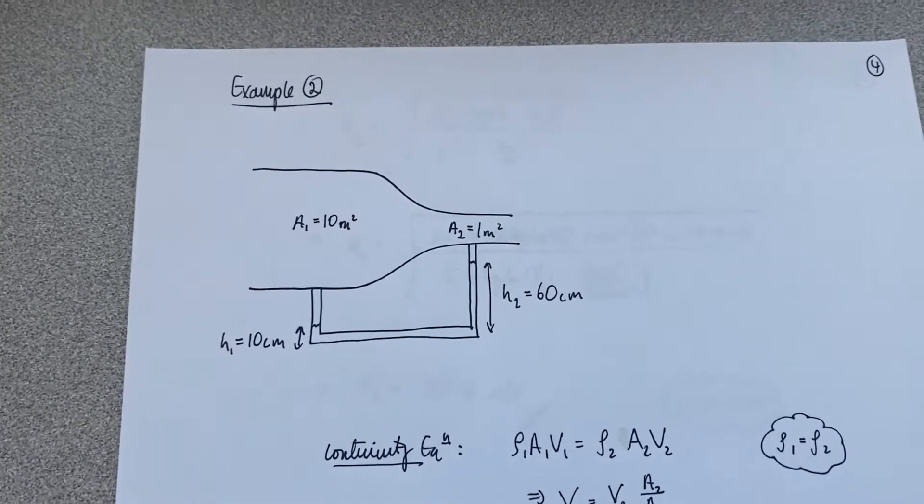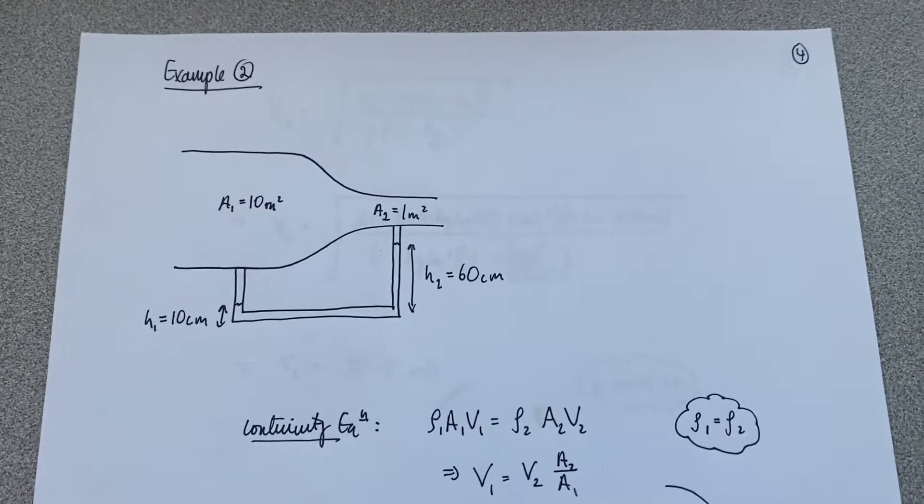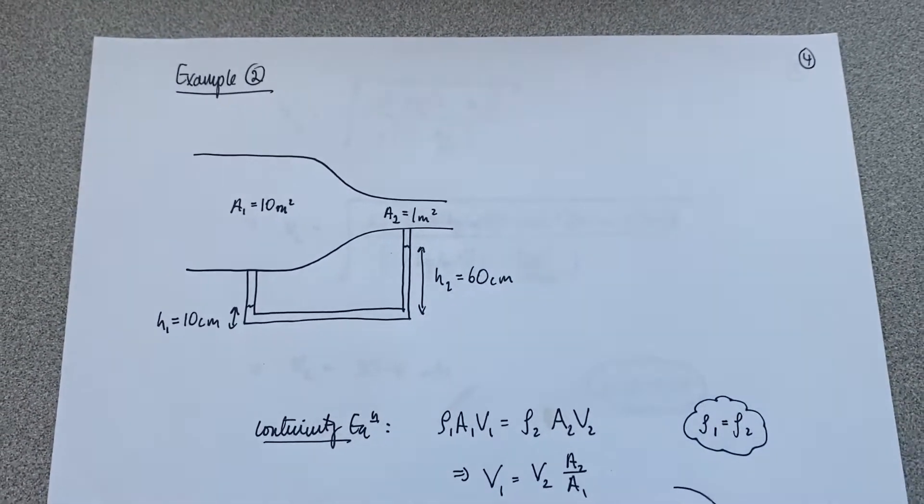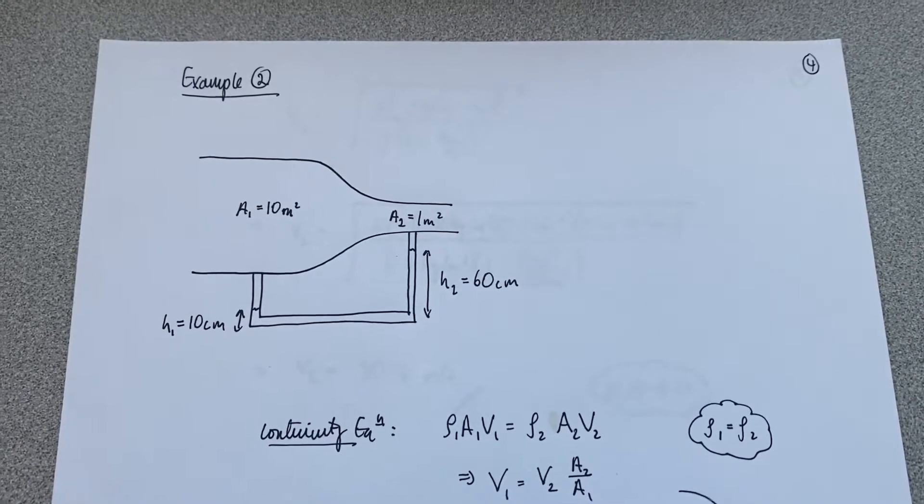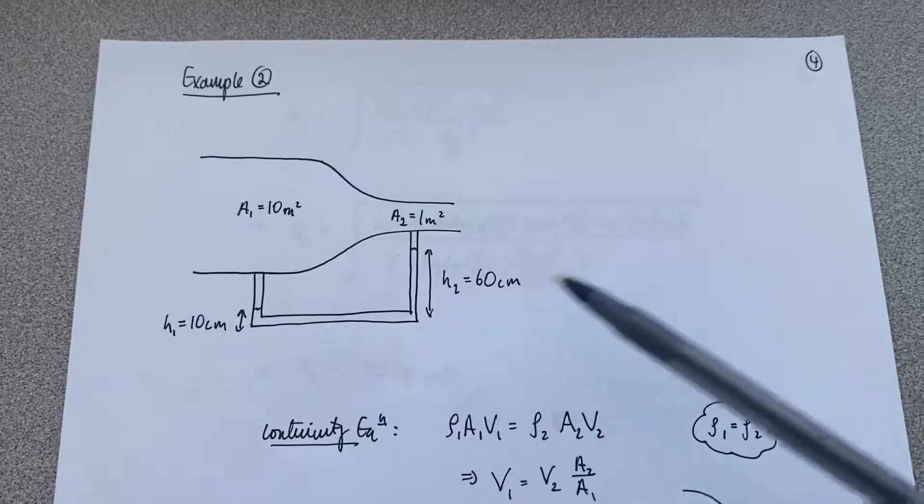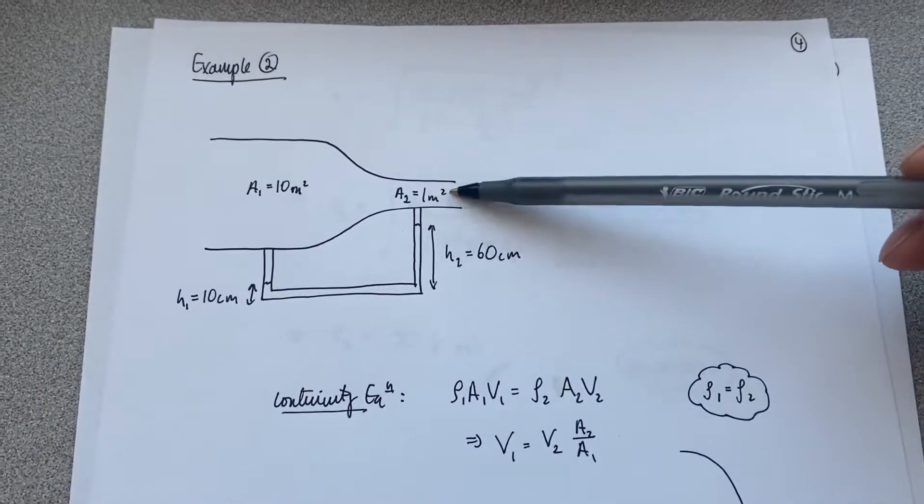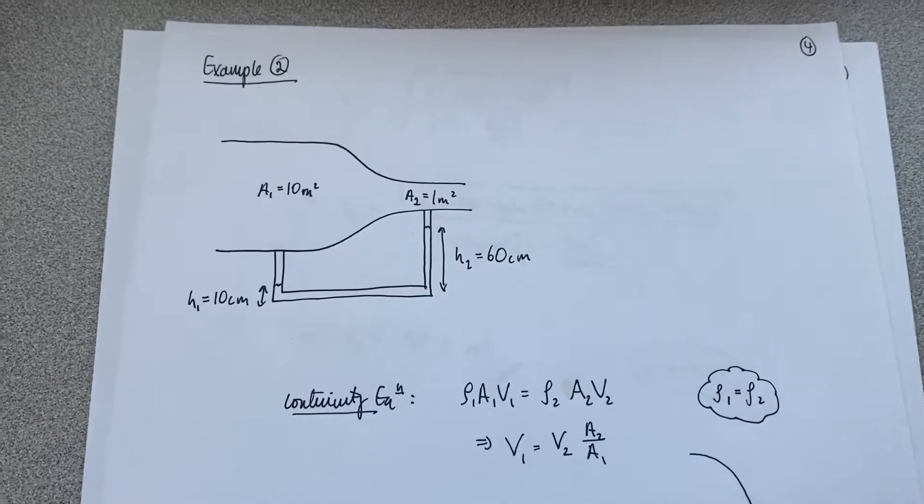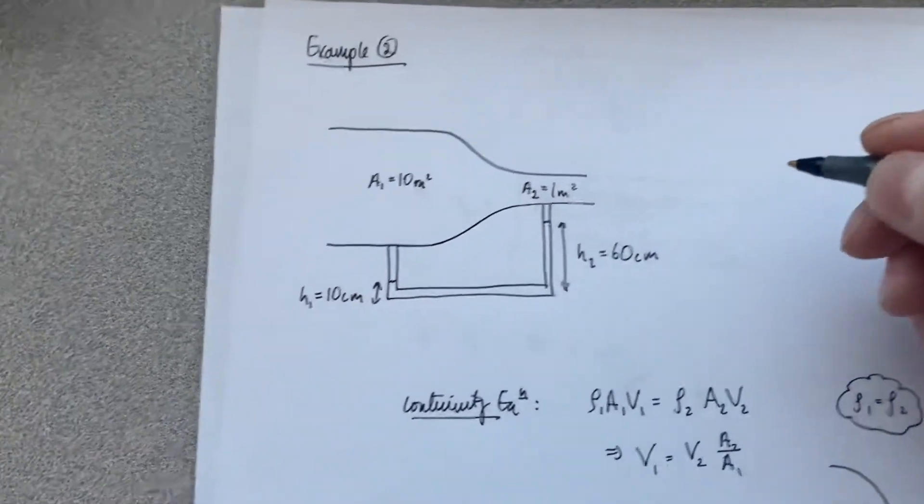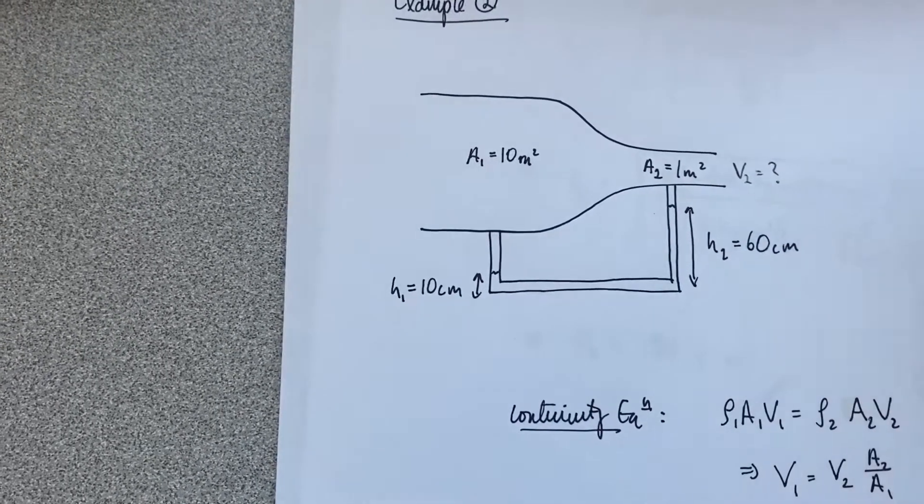So now let's have a look at a different example. Example number two, as I'm calling it, where I have some different information. So this time I know the cross-sectional areas of both the settling chamber and the test section, and I know the water levels in both sides, and I would like to find out the flow velocity over here in the test section. So let's call this v2 is question mark, right?